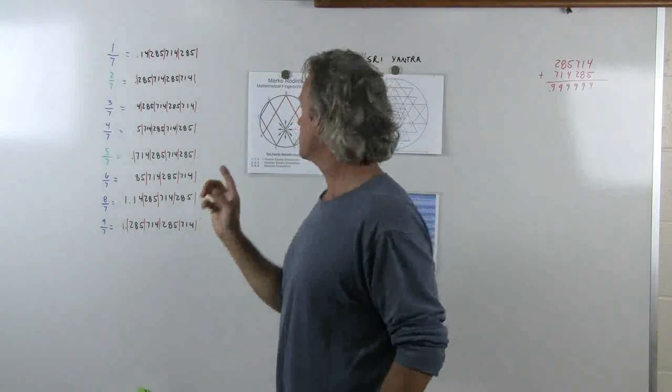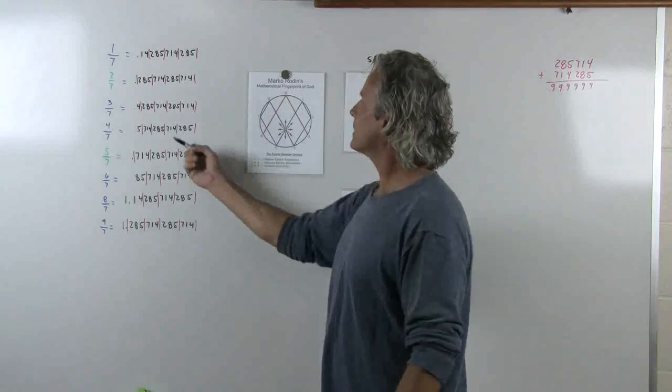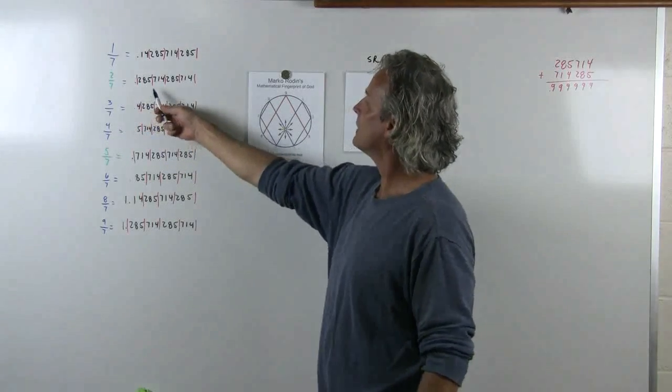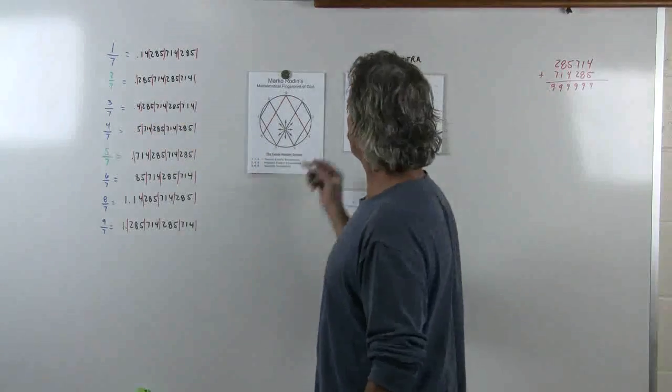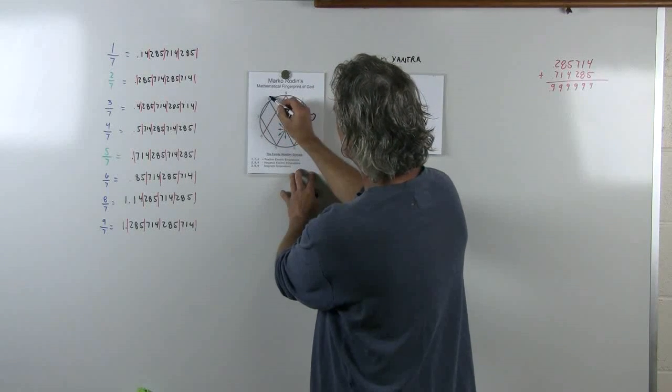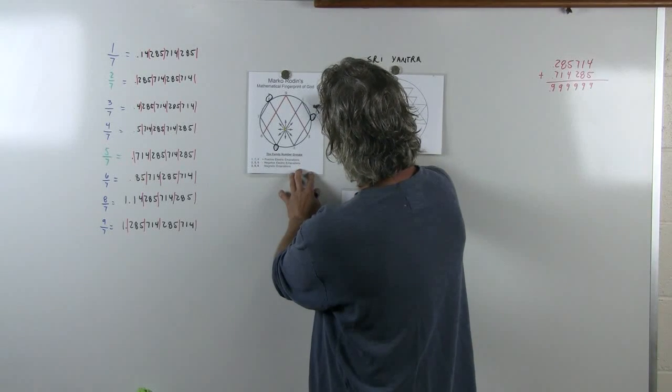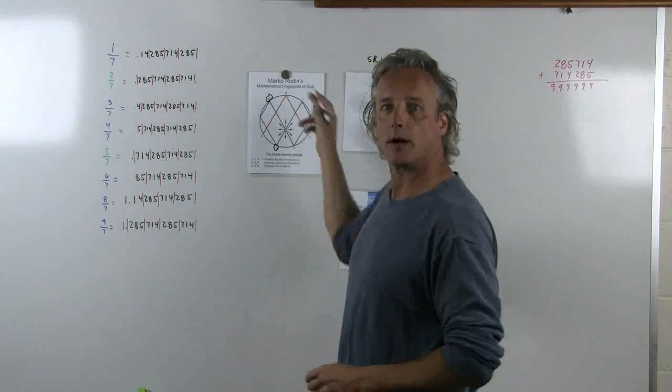Now how this sequence is important, let me show you in Marco's math here. So let's look at the 2 over 7. We've got the 2, 8, and 5 family number group. So the thing goes 2, 8, and 5.